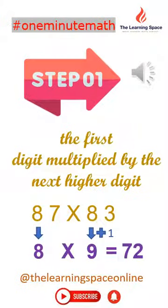In both numbers, the digit 8 is in the 10's place. We need to multiply 8 with its next higher digit, which is 9. The product is 72.